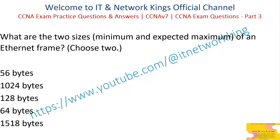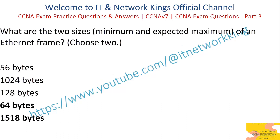What are the 2 sizes — minimum and expected maximum — of an Ethernet frame? Choose 2. 56 bytes. 1024 bytes. 128 bytes. 64 bytes. 1518 bytes. Answer: 64 bytes. 1518 bytes.